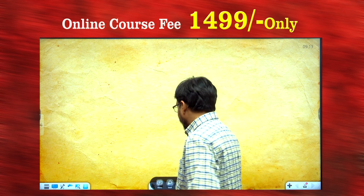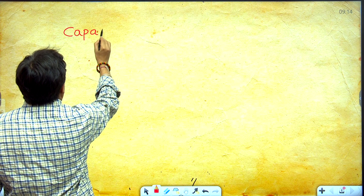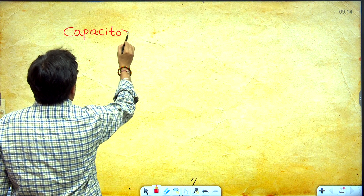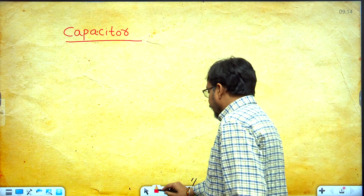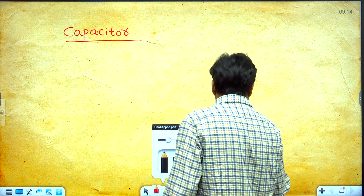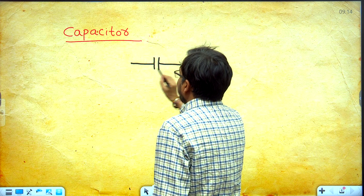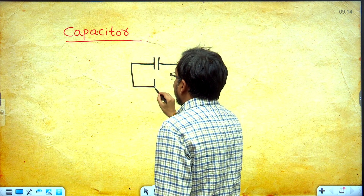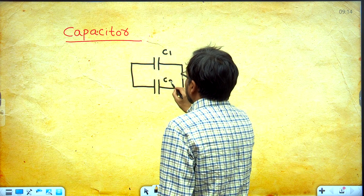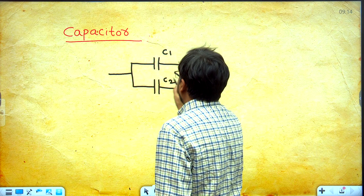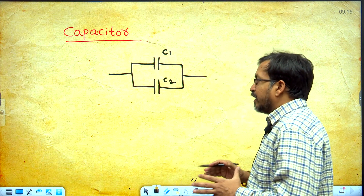Now students, I am writing: capacitors when capacitors are connected in parallel. Here I am considering two capacitors having capacitance C1 and C2. This is C1, this is C2. The two capacitors are connected in parallel.